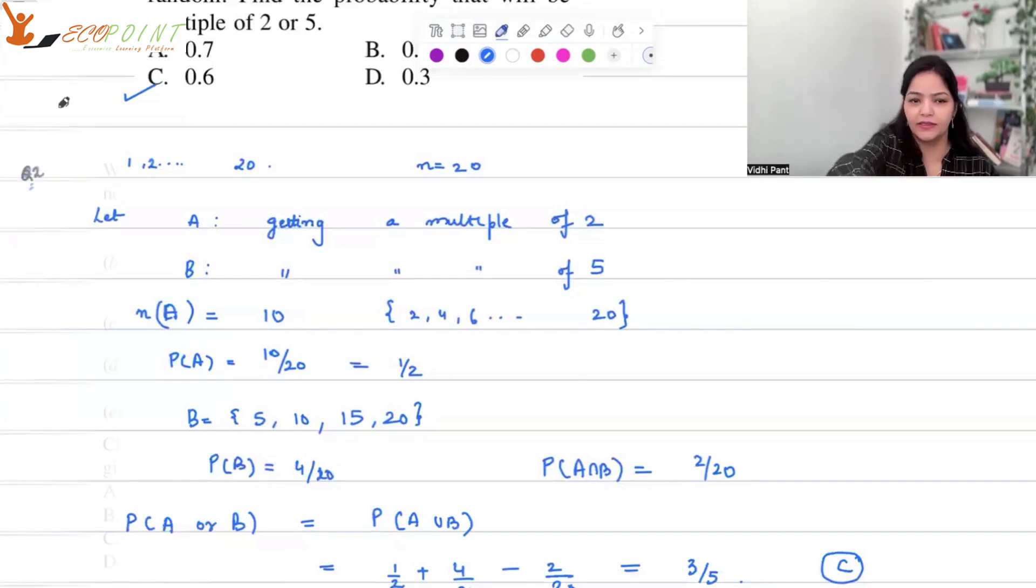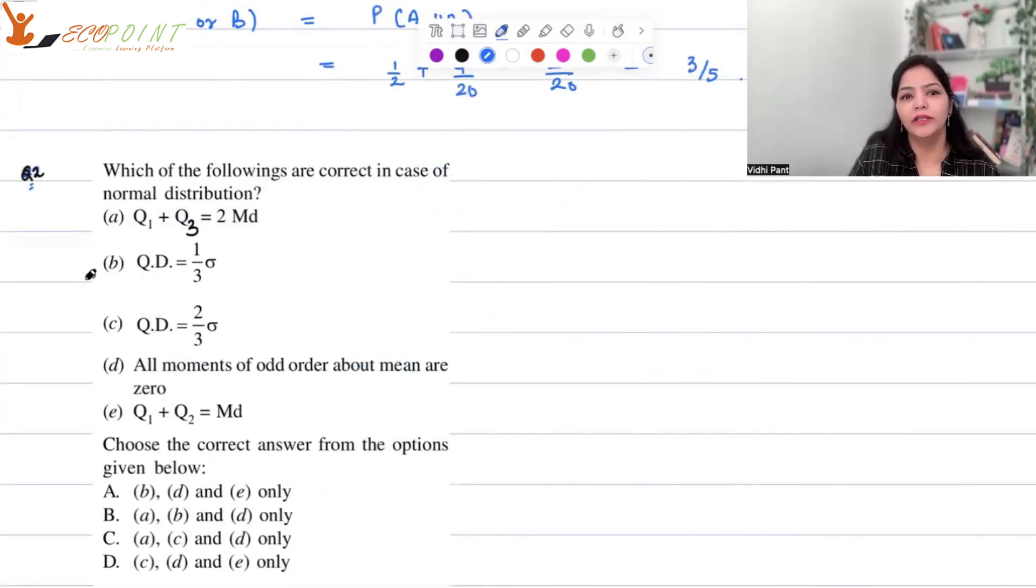Number 2, which of the following are correct in case of normal distribution, that is for a symmetric distribution? Statement 1 is Q1 plus Q3, the first quartile and third quartile, is equal to twice of the median. Second statement is quartile deviation is 1 by 3 sigma. Statement D is all moments of odd order about mean are 0. And statement E is Q1 plus Q2, where Q2 itself is median, is equal to median.